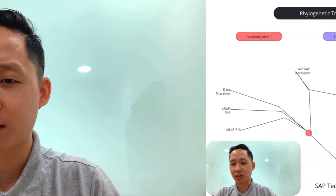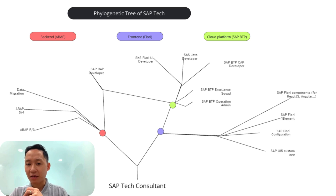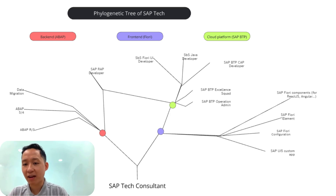So, let's start at the center of it all — the SAP tech consultant. This role is specialized in working with the SAP technology stack, helping businesses to implement, optimize, and maintain SAP systems. But within this career, you have various paths you can take based on your skills and interests.